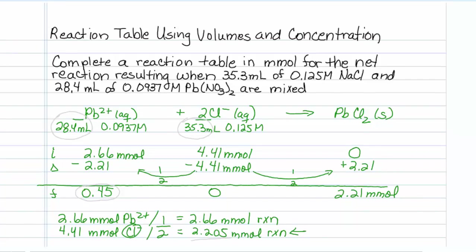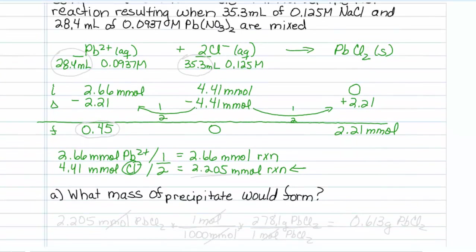The next question says, what mass of precipitate would form? Well, we know we have 2.205 millimoles. I'm just going to add an extra sig fig here. I know that 4.41 divided by 2 is actually 2.205. So just to make sure webassign doesn't get thrown off, I will put 2.205 millimoles